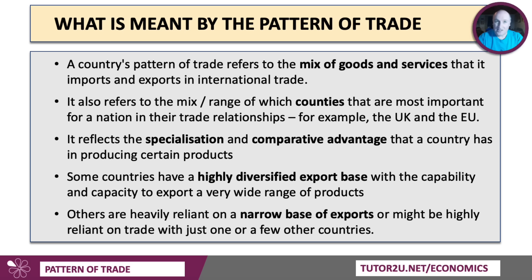The pattern of trade that we see in the data reflects underlying specialization. Countries are specialized in certain industries, and it also reflects where the relative comparative advantages and relative opportunity costs — supply costs — lie for different products. Some countries have a very complex, highly diversified pattern of trade, both of exports and imports, and the capability to export a very wide range of products. Others have a much narrower base of trade, perhaps highly dependent on just one or two industries or a small cluster of countries.